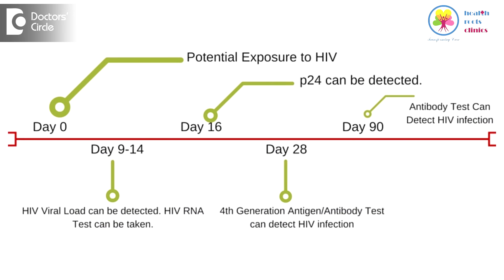The second test which can be used and which can detect HIV infection as early as about 2 weeks is the combined HIV antibody and P24 antigen test. This can detect infection as early as about 2 weeks. The more commonly used HIV antibody tests, ELISA tests, or alpha tests can detect HIV infection as early as about 3 weeks.